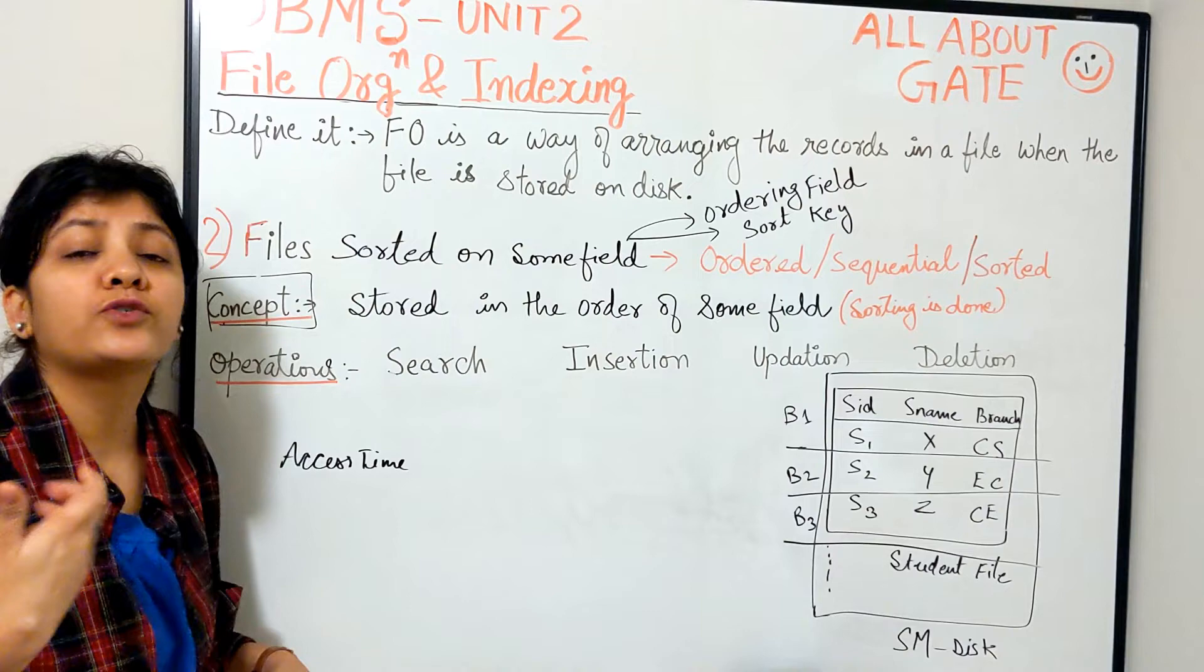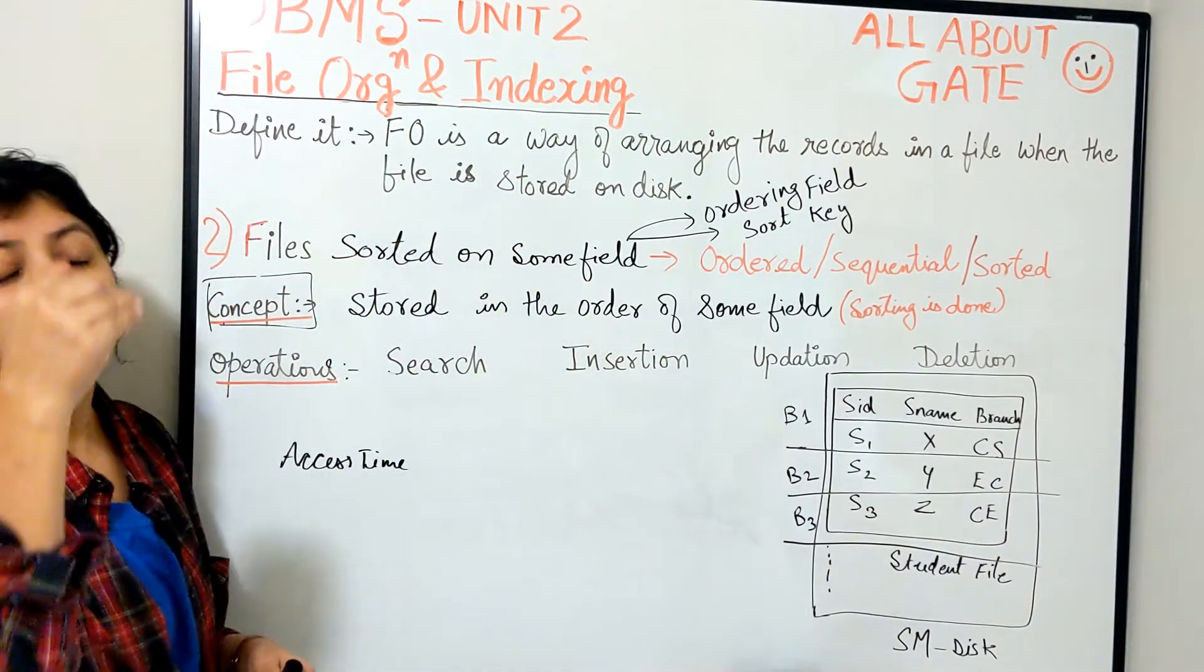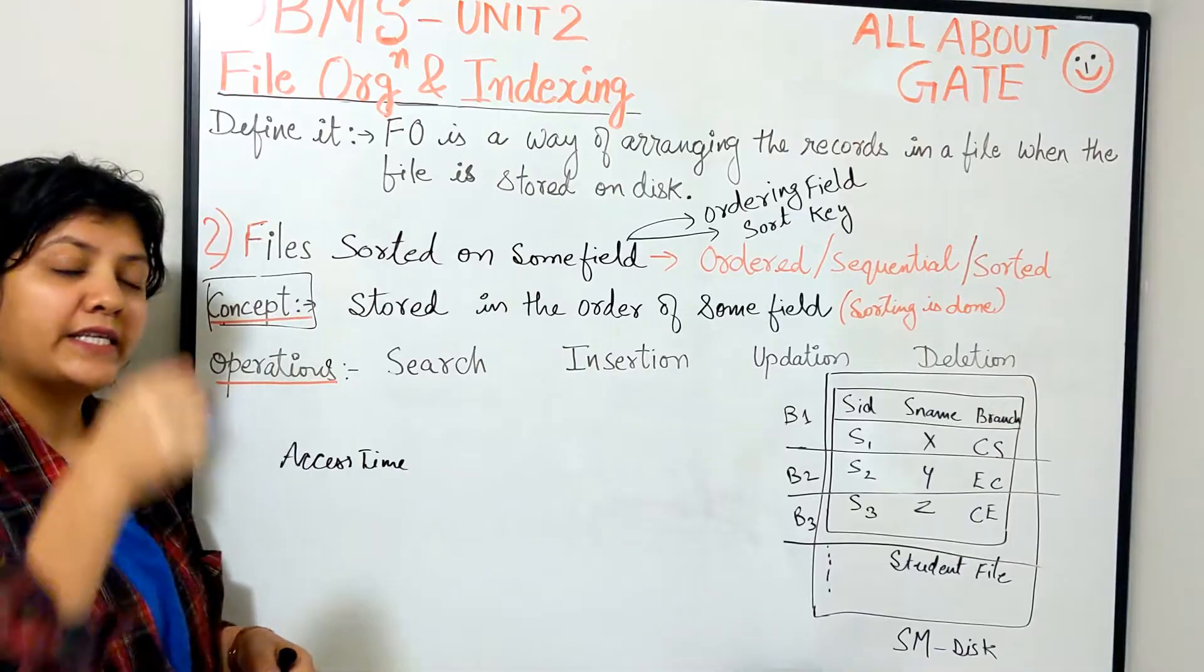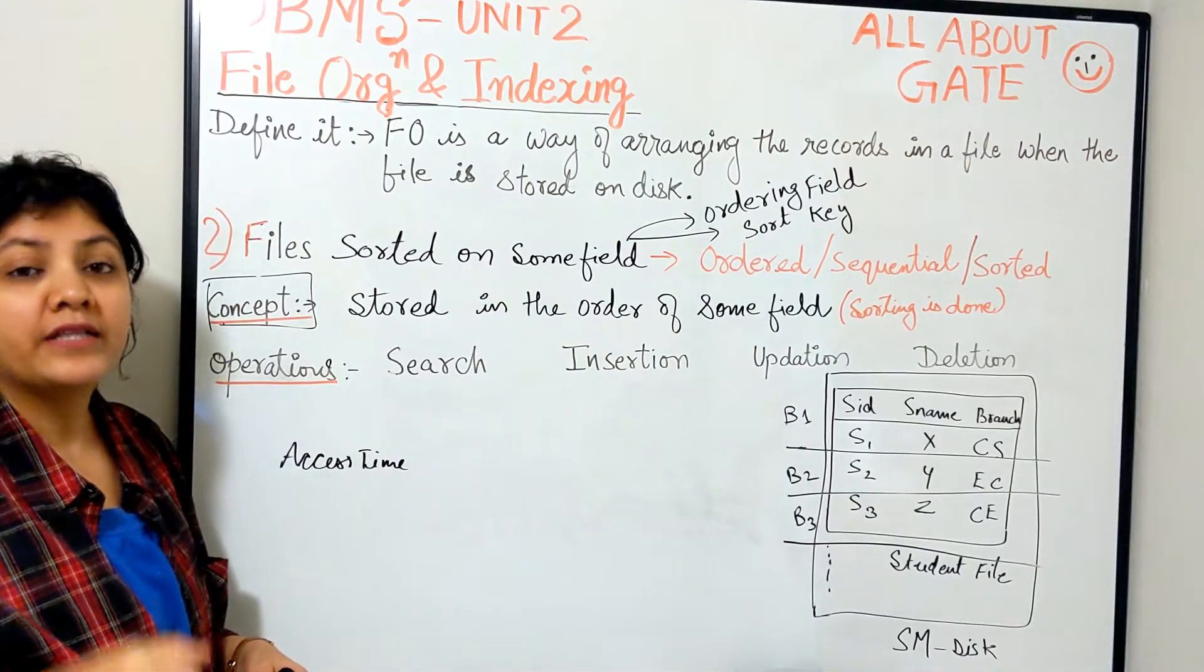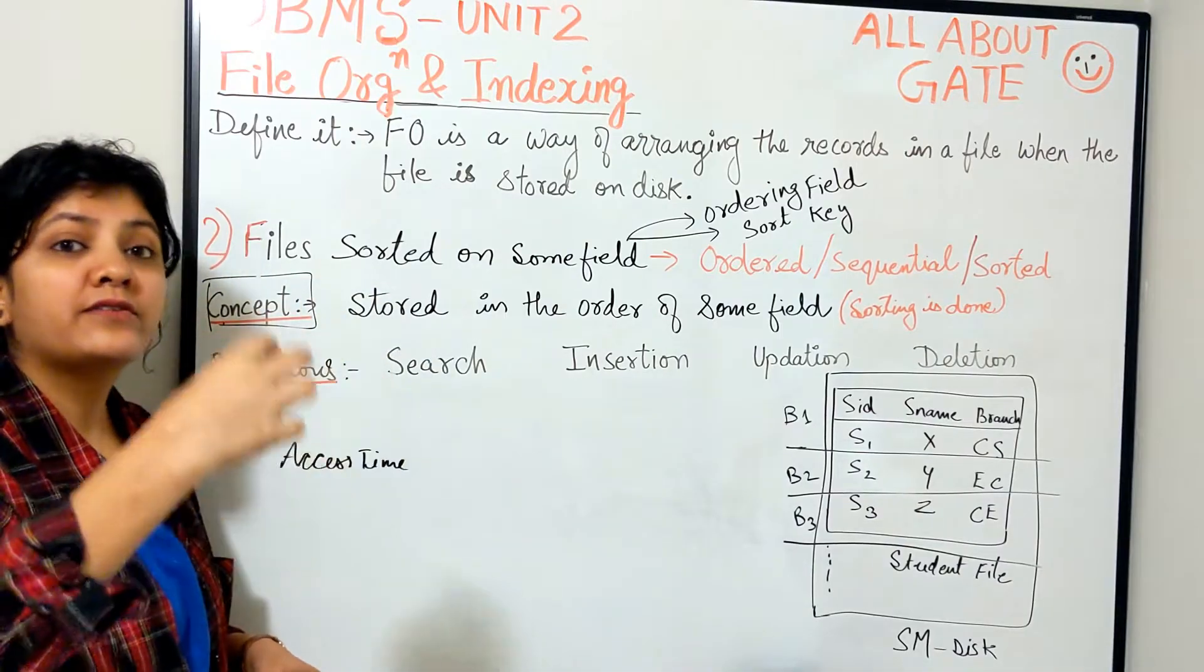I am taking my field SID and I am sorting my file based on the SID so that it should be 1, 2, 3 onwards. Then that file becomes an ordered file, an ordered student data file which is sorted on the student ID.